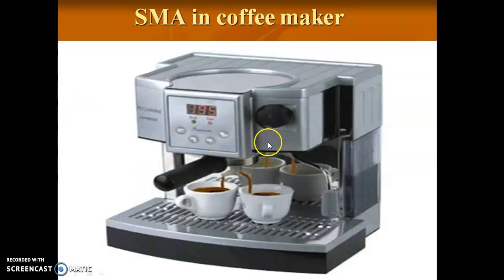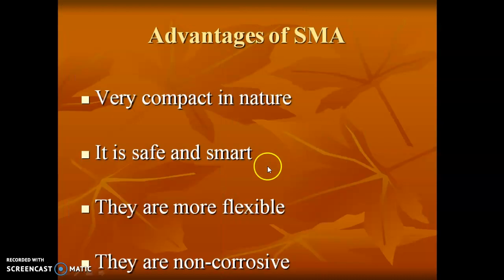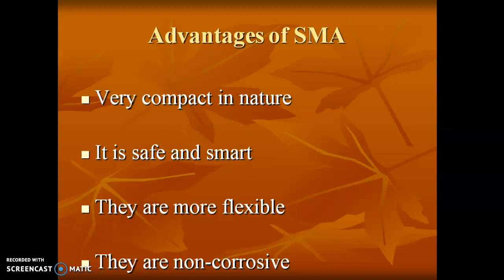In coffee makers, the strip material used is also made up of shape memory alloys. The advantages of SMA include: it is very compact in nature, safe and smart, more flexible, non-corrosive, non-toxic, and the material cannot be rusted.